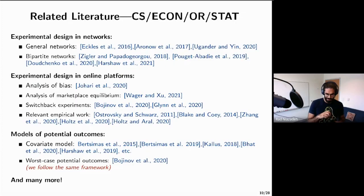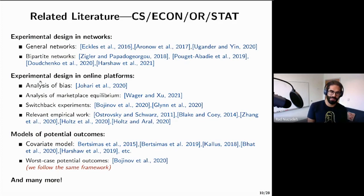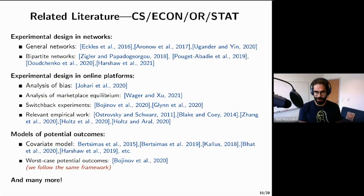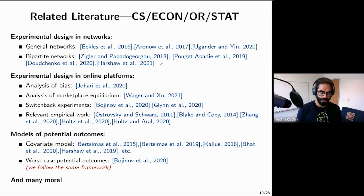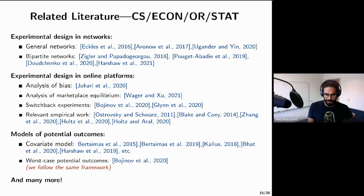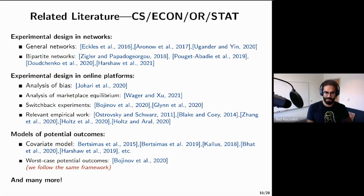There is a long list of work related to experimental design, especially with a focus on networks and online platforms, at the intersection of CS, Economics, OR, and Statistics. In the interest of time I'm not going to do the full literature review, but please feel free to ask me questions about any of these works. I would be happy to answer, and please take a look at the paper for a more in-depth literature review.